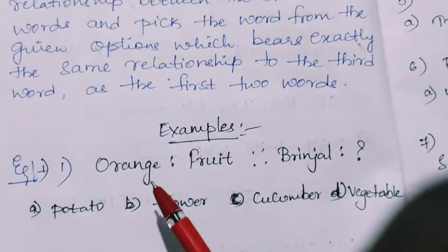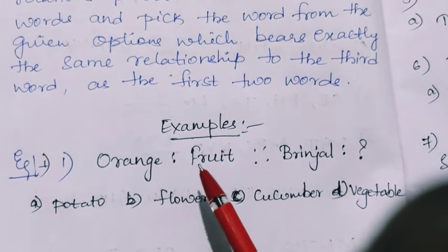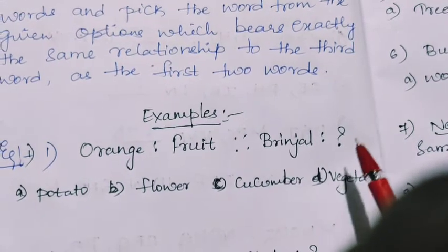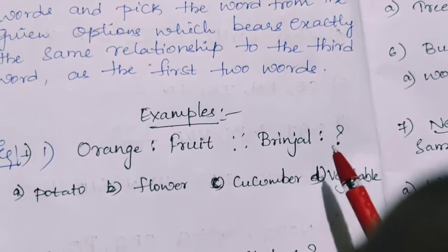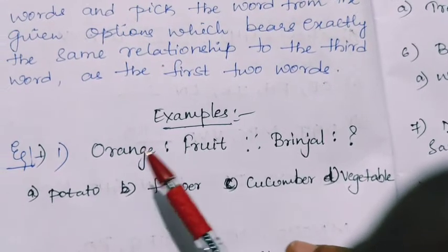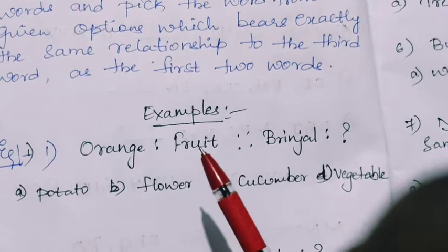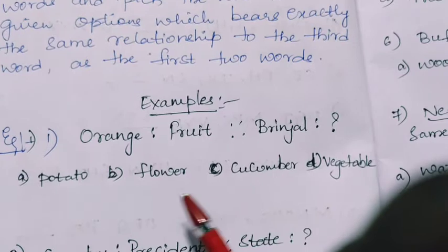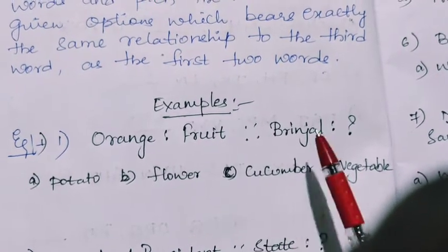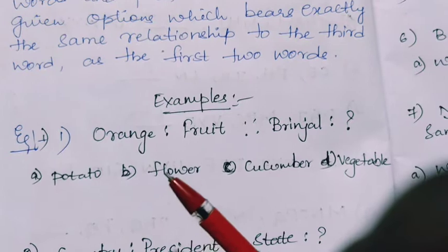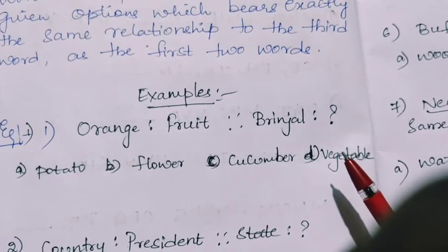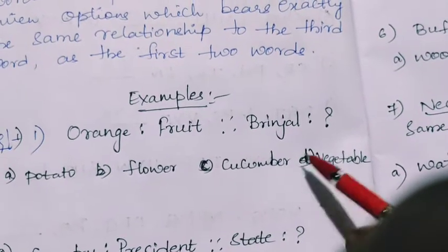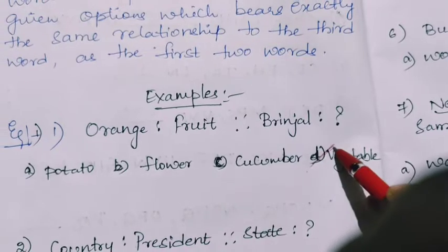Firstly, we will see one example. See here, orange is to fruit and brinjal is to what? We have to find out this word. So here we have seen one pair of words, orange is fruit. We know brinjal is, we have to identify from the given options here. So brinjal is to potato, flower, cucumber, or vegetable. Orange is a fruit means brinjal is a vegetable, so this will be the answer.